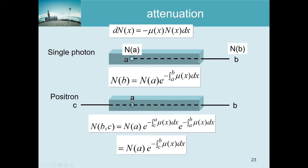This also means that if the point source is moved toward the detector, the integral of attenuation coefficients is smaller - we only integrate over a shorter path, so fewer photons are lost. In SPECT, therefore, it depends on where the photons are emitted to know how many will actually reach the detector.